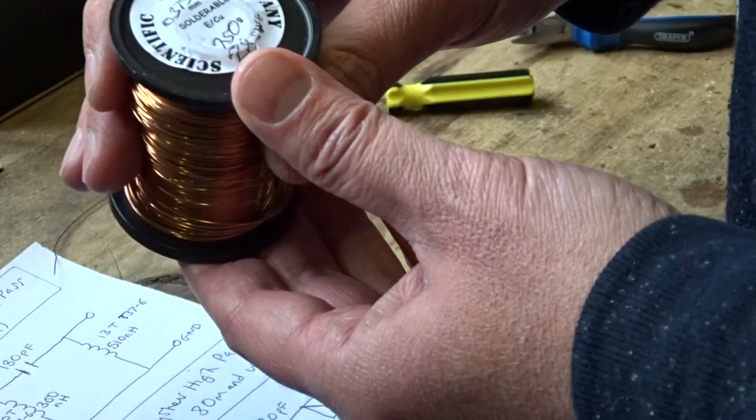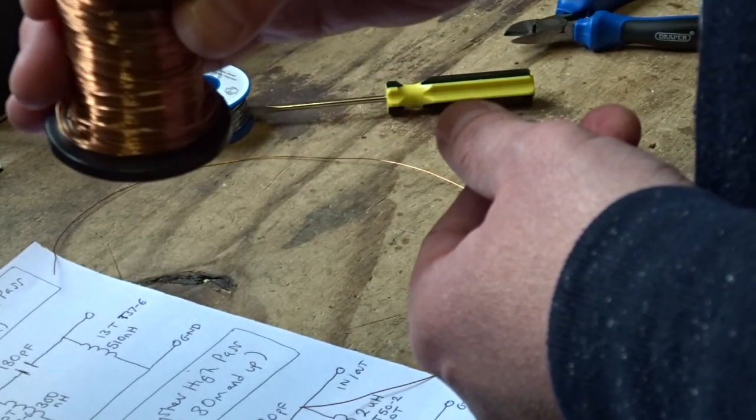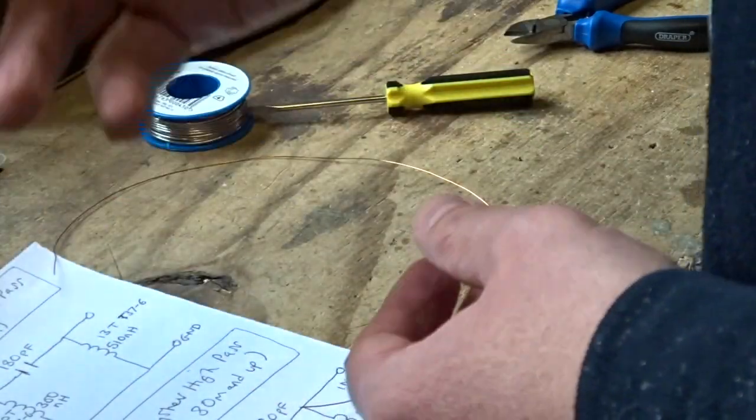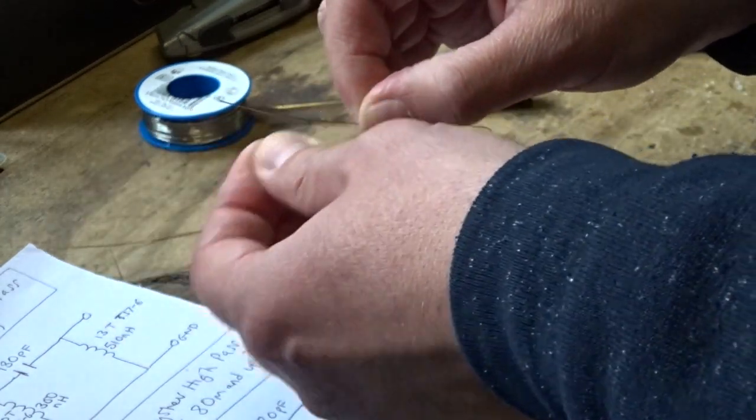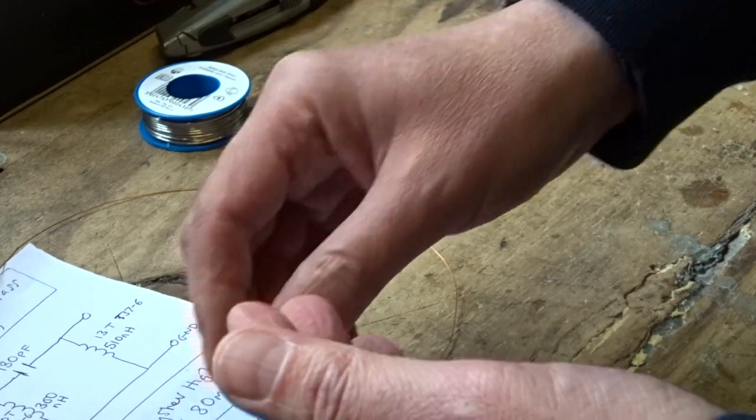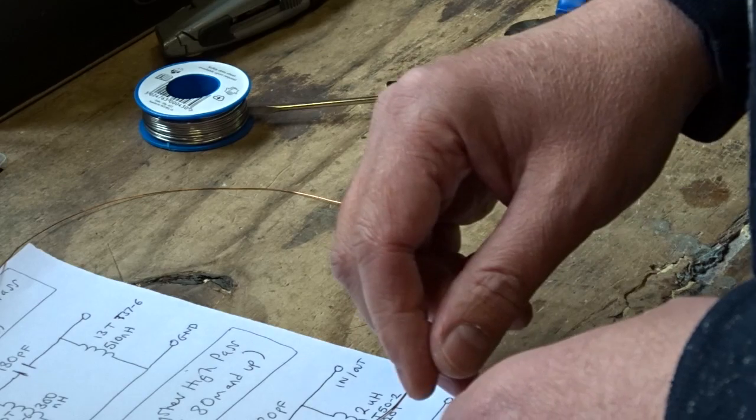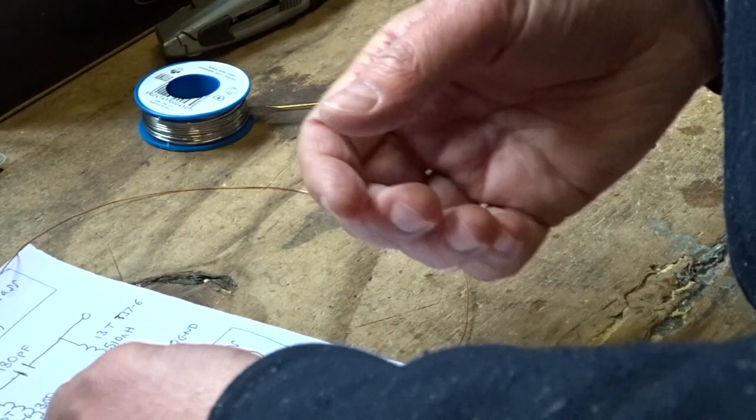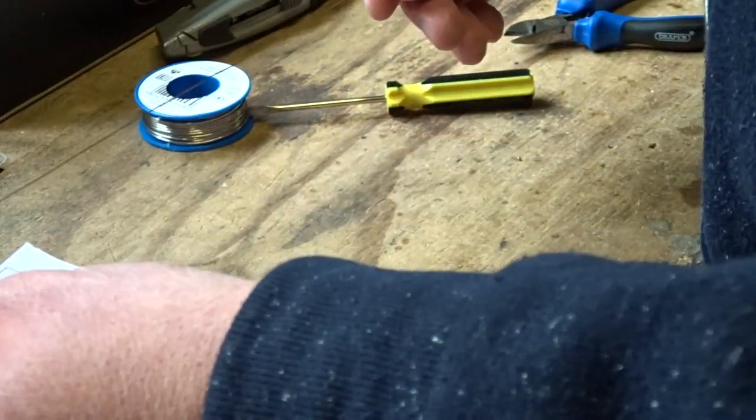Now what you'll need is some enameled copper wire. This is 28 standard wire gauge, which I tend to use for most things. I've got some heavier gauge for if I'm putting more power through it, or if you're winding very few turns on a larger core, then it can be good to use heavier gauge wire because the turns stay in place a bit better.